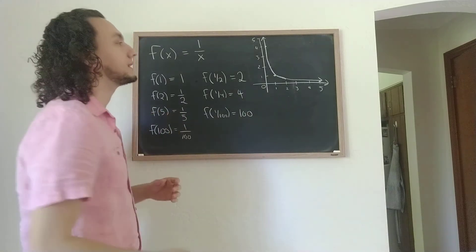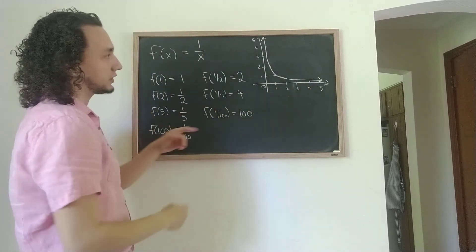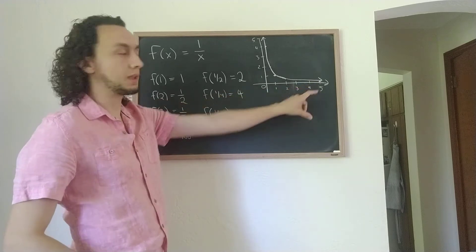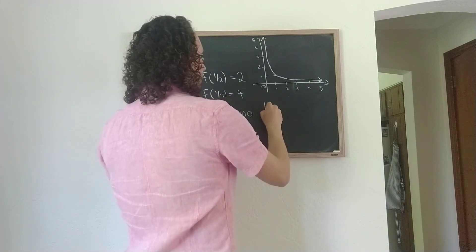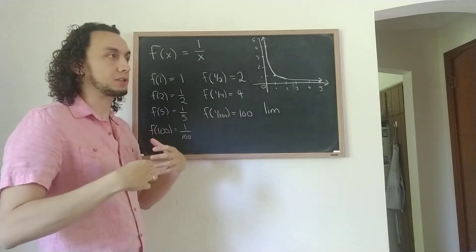And so this idea, there's actually two ideas here. One is the first one, that as we put larger and larger inputs in, the value of the function gets closer and closer to 0. And the way that we can write that, once again, I'm not defining the notion of a limit precisely, this is just using your intuition,